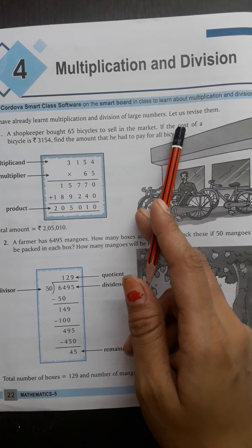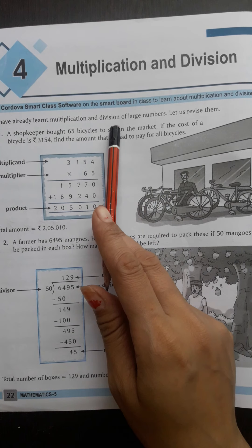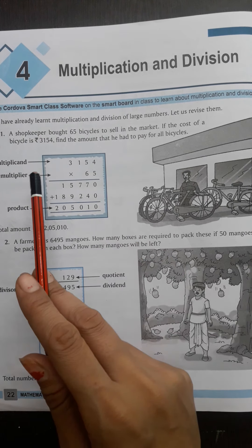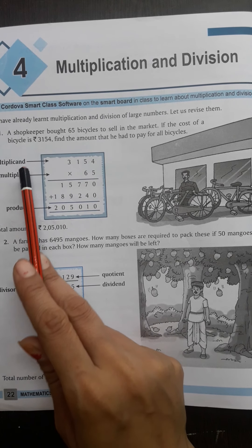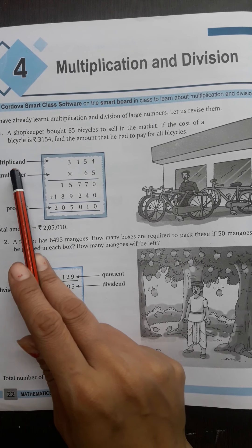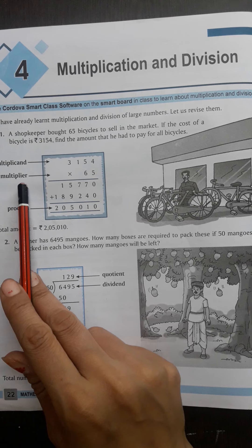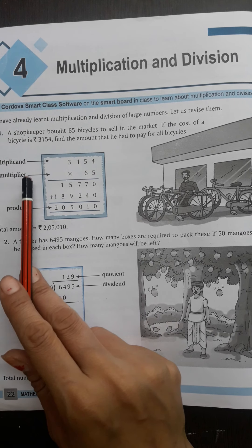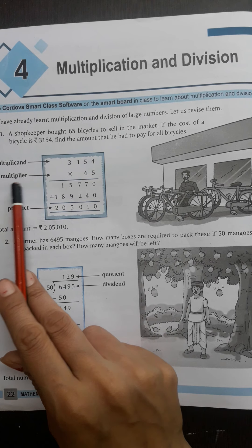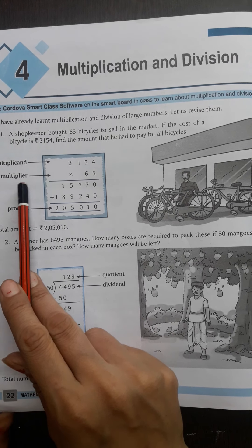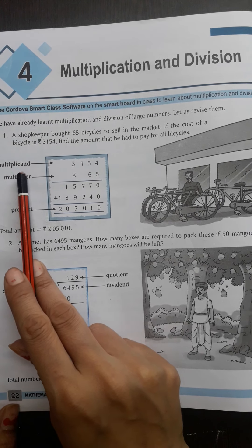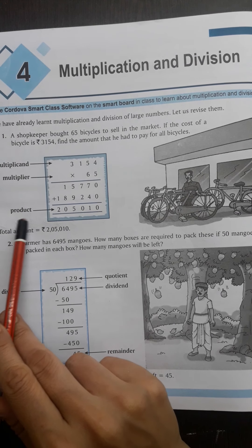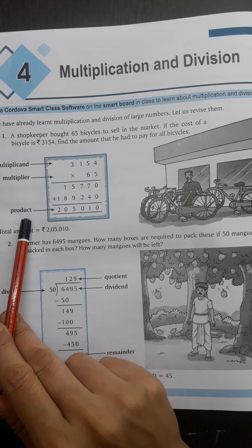We have read this in 1st, 2nd, 3rd, 4th. Multiplication and division, how do we do big numbers? The numbers we multiply are the multiplicand and multiplier. The answer we call the product.